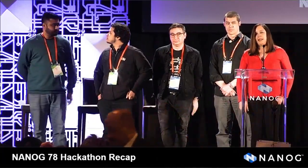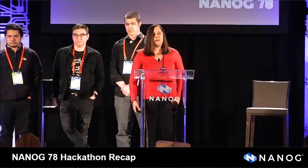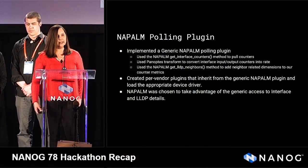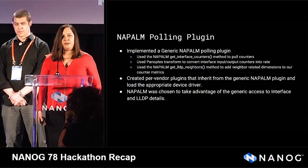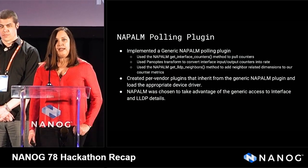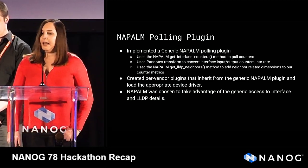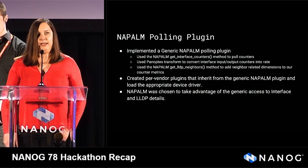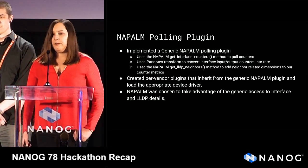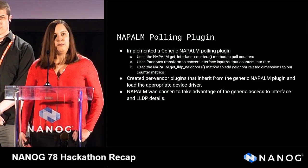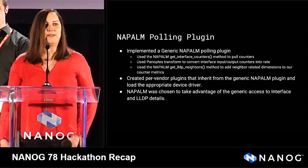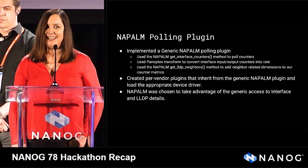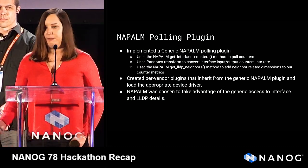The first step was to write a polling plug-in in NAPALM. The Panoptes team was kind enough to supply us with a starter plug-in. We took that starter plug-in and used the get_interface_counters method in NAPALM to pull interface metrics. We used some Panoptes built-in transforms to create a conversion from counters to input and output rates. The get_lldp_neighbors method was used to enrich that data with LLDP data. We created this generic plug-in and had each of our per-vendor plug-ins inherit from it. We chose NAPALM because it had support for most of the devices we chose.